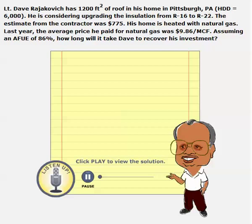This is problem 5.11. Dave has a house and he is trying to improve the insulation. The contractor comes up with an estimate of $775. He is using natural gas to heat the home, and we are trying to calculate how long it will take Dave to recover his investment.